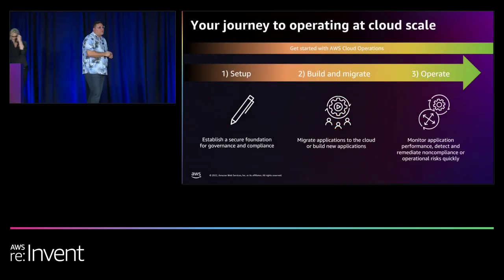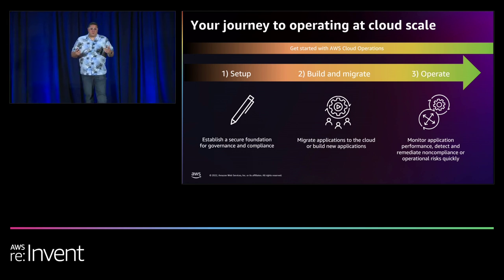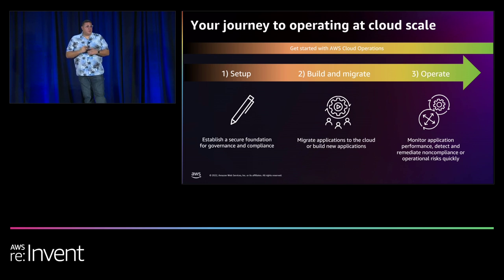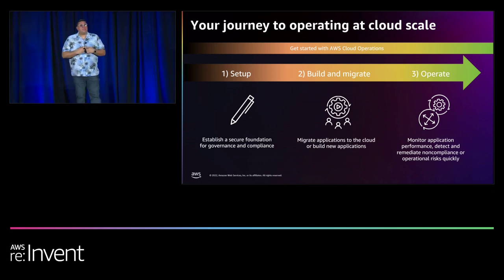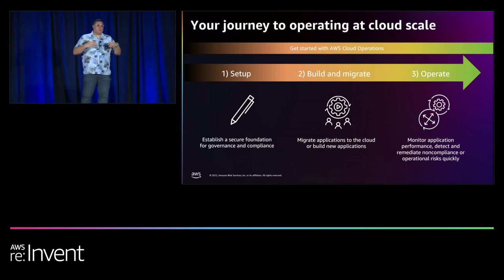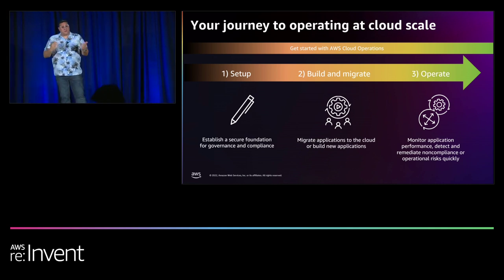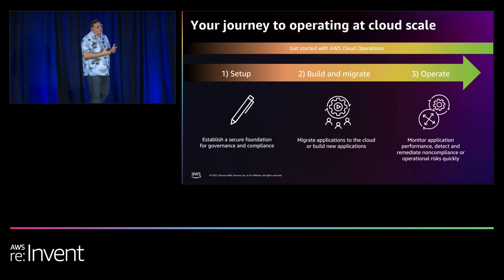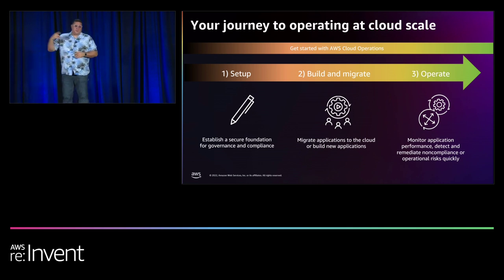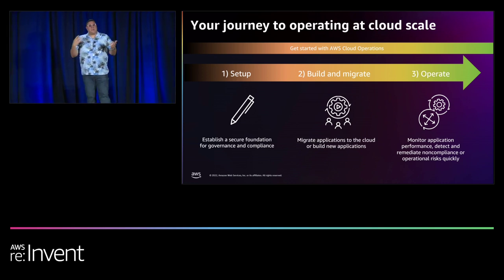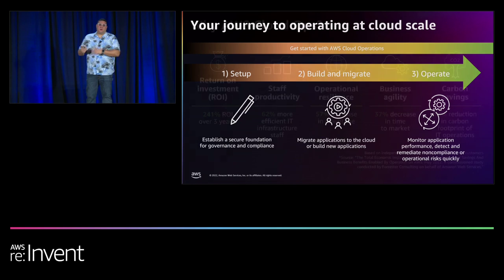This slide represents the CloudOps journey or CloudOps operations model, which has three steps or pillars. The first is Setup — setting your cloud foundation down with governance and compliance built in from the start. Once you have those in, you have the confidence to migrate workloads in a secure and compliant manner into AWS. The third pillar is operating existing workloads through application monitoring, enhancements, performance, and detecting and remediating compliance in an automated fashion.